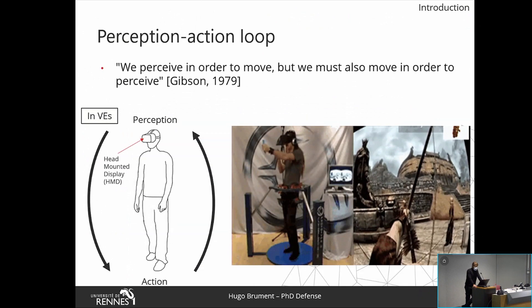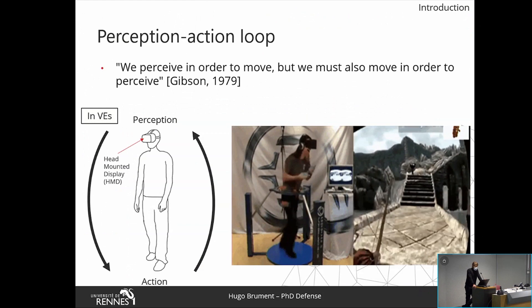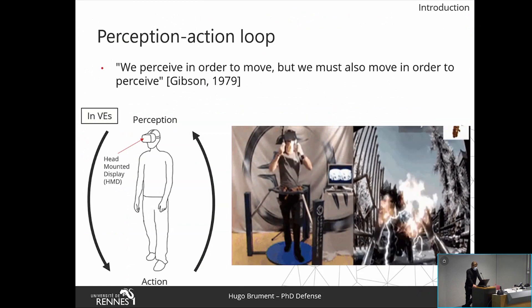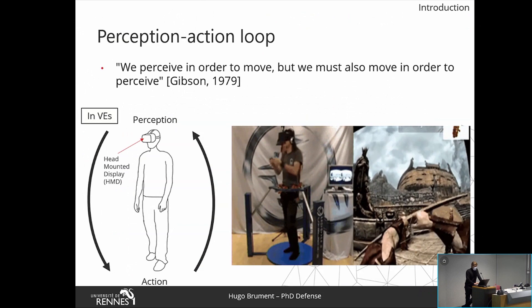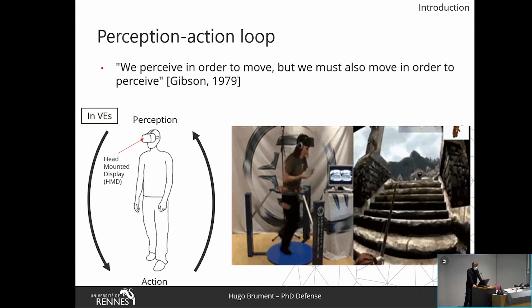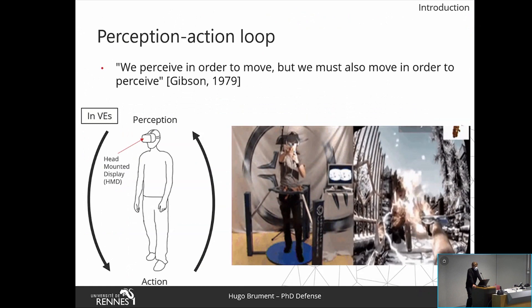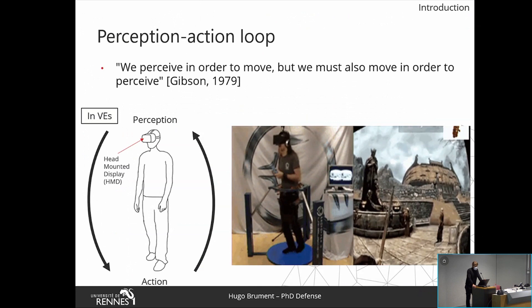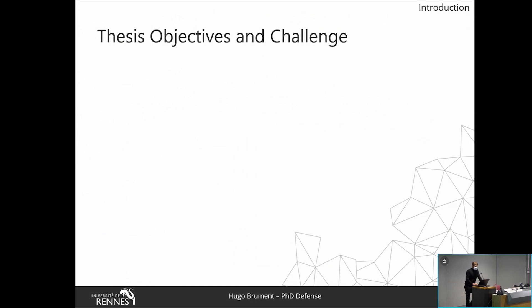But how does this loop work when humans are exploring virtual environments? On the video, you can see a user interacting with a virtual reality system. He is immersed in the virtual environment and interacting with it thanks to interaction devices such as a head-mounted display to see the virtual environment, controllers to select or manipulate objects, but he is also navigating thanks to a platform that enables him to move and explore this virtual environment. The way he perceives and interacts with this environment differs from what he would do in a real environment, so the perception-action loop is modified.